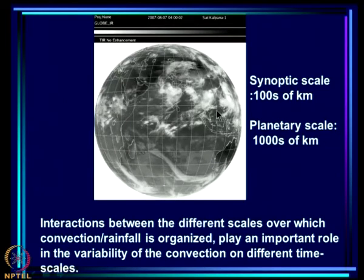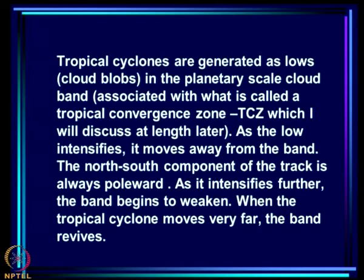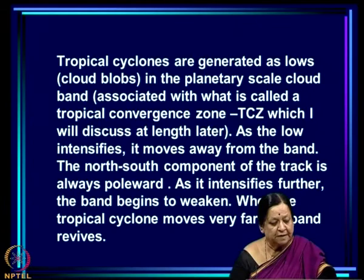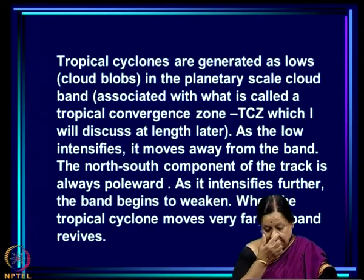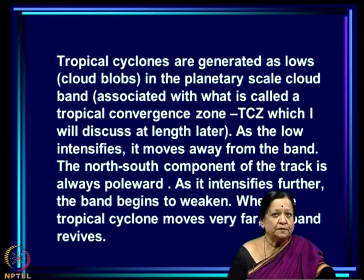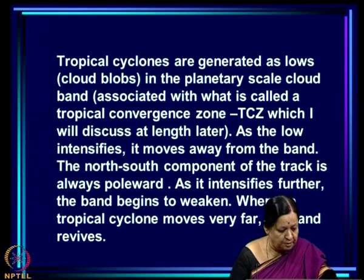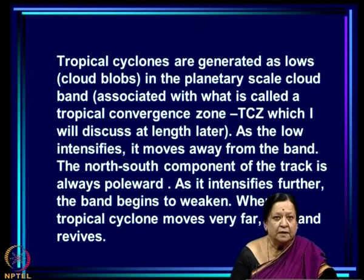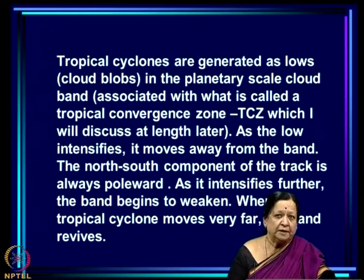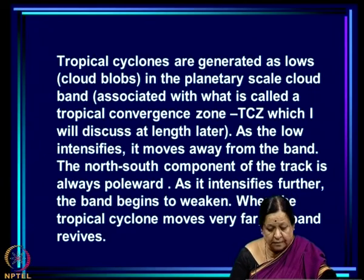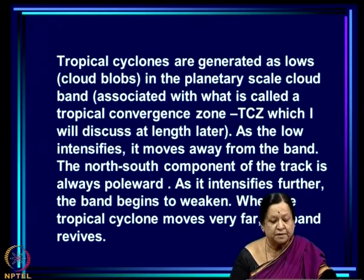Interactions between the different scales over which convection or rainfall is organized play a very important role in the variability of convection on different time scales. An interesting example is tropical cyclones, which are generated as cloud blobs in the planetary scale cloud band associated with what is called a tropical convergence zone.